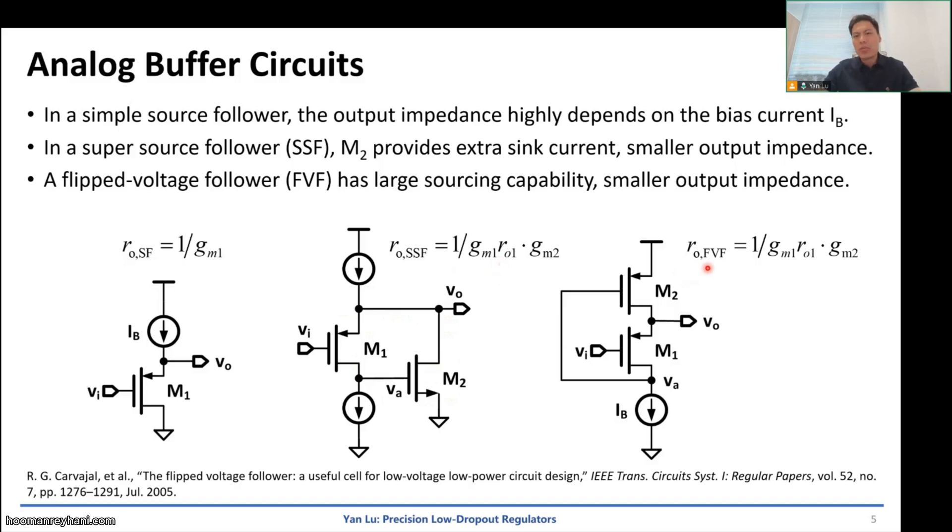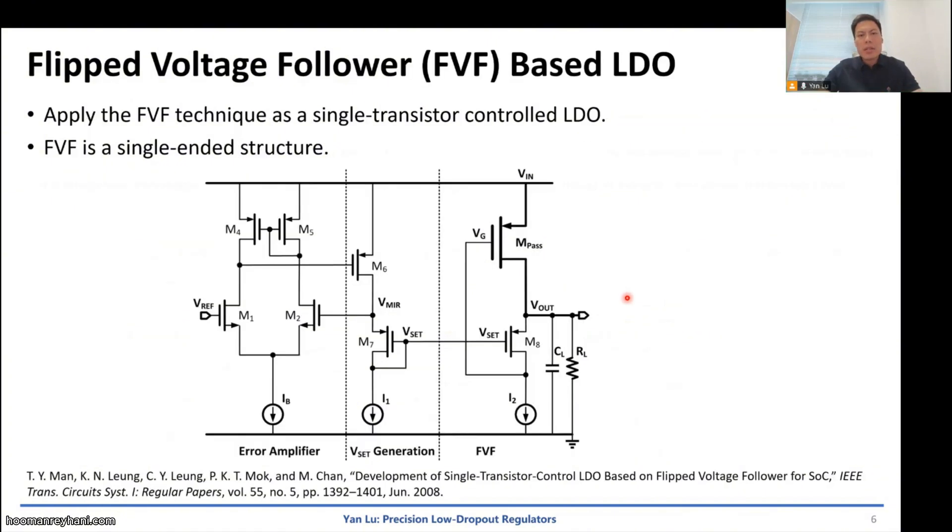Similarly, we have a flipped voltage follower, it has similar mechanism. The output variation will be amplified by M1 to VA and then be converted to current through M2. So the output impedance is also 1 over gm times gmro. The difference between SSF and the FVF is the current sink or current source capability. Right here, we use the PMOS as the example. If we use NMOS, we can also change the polarity or the sinking or sourcing current capability.